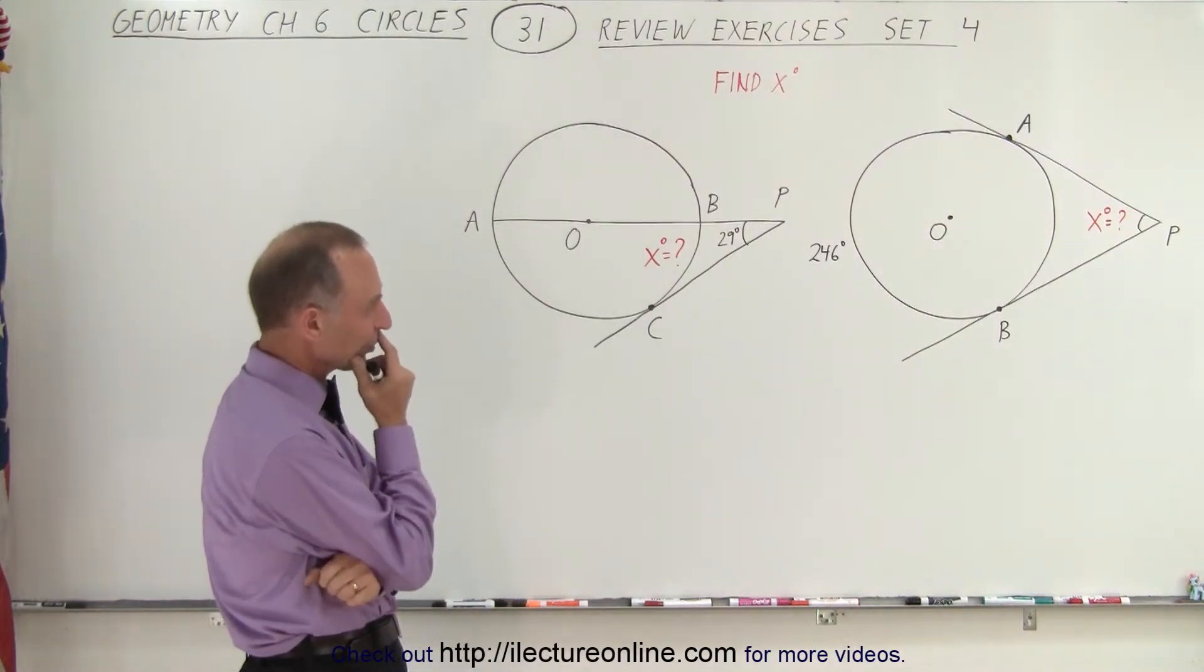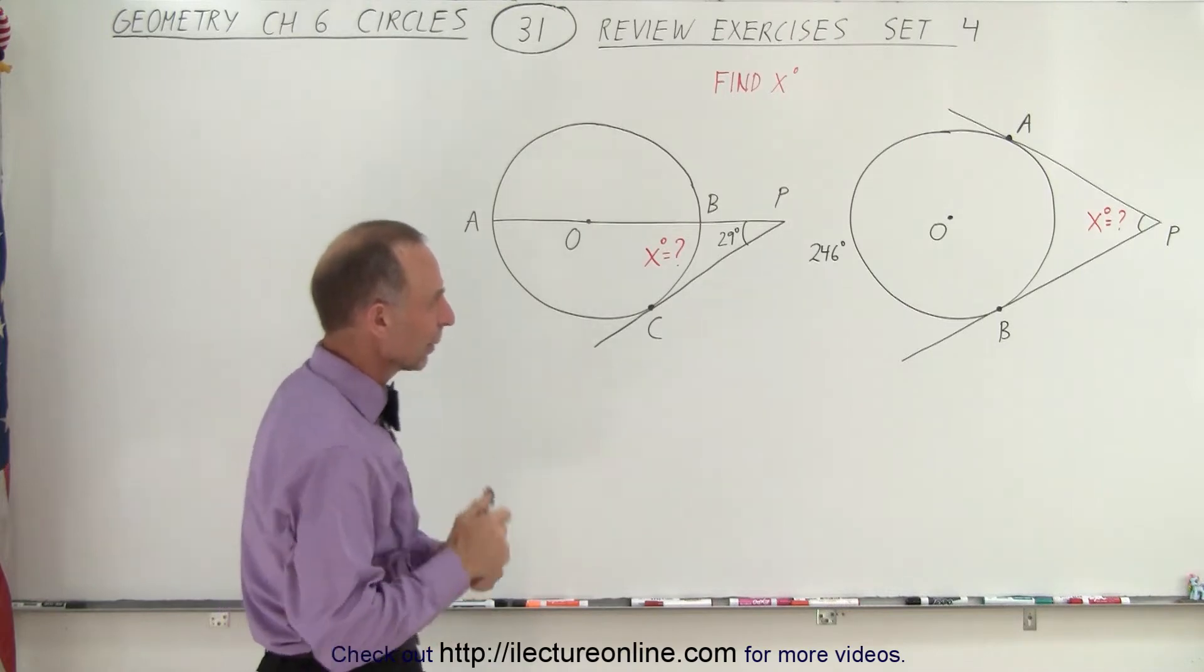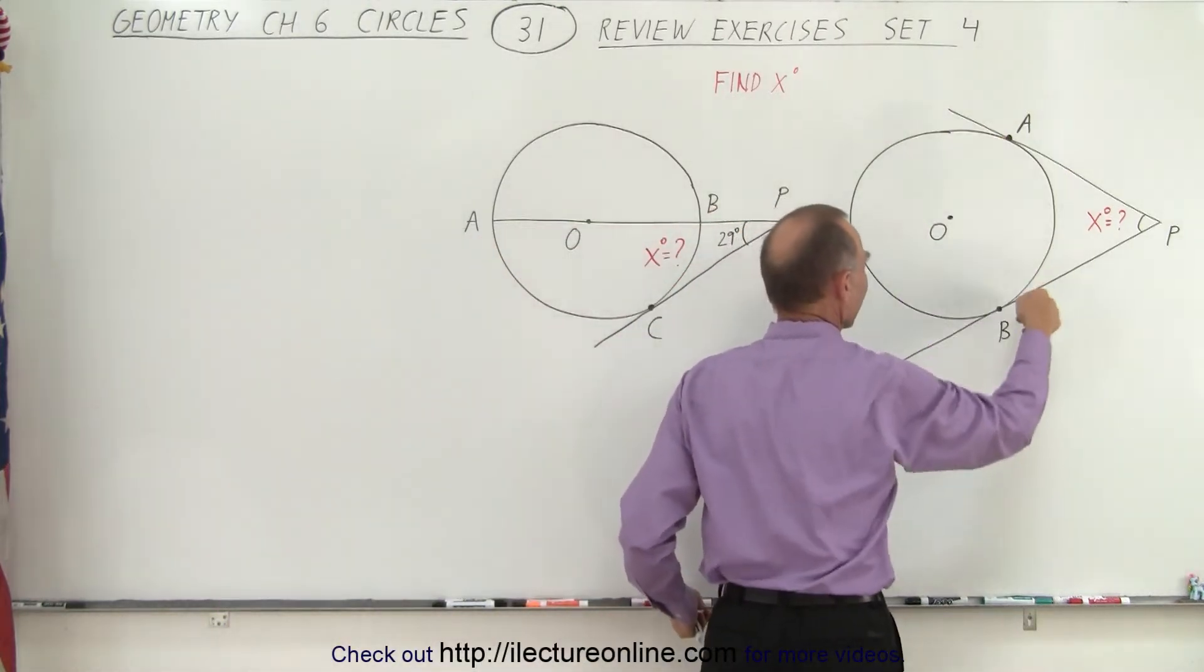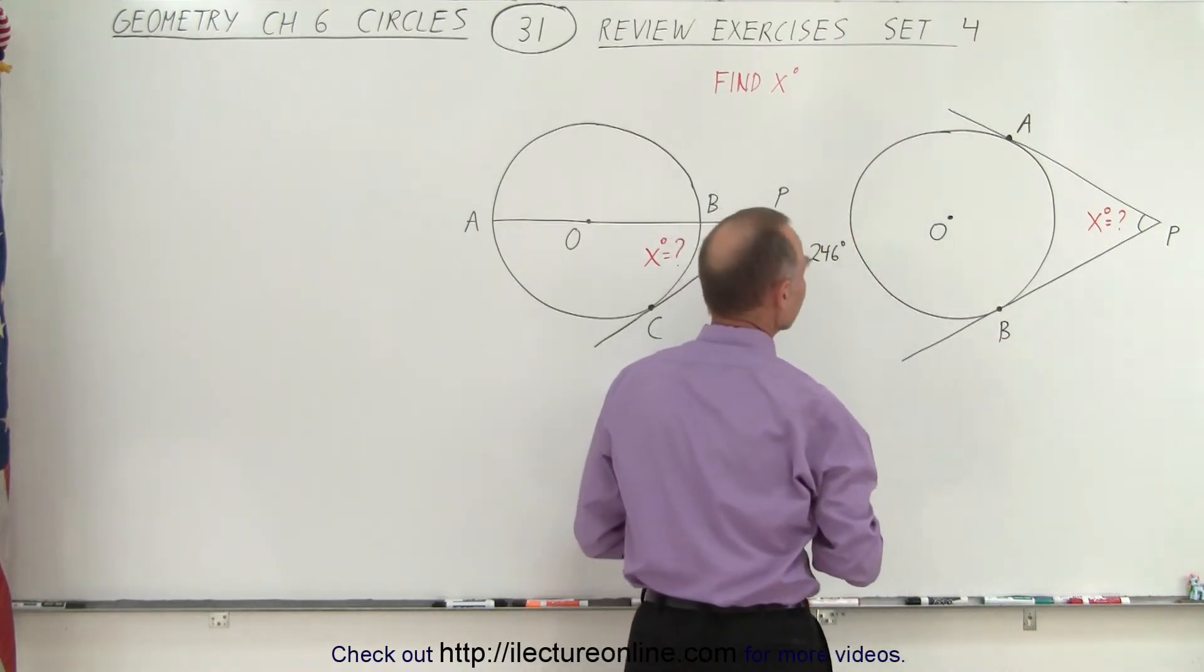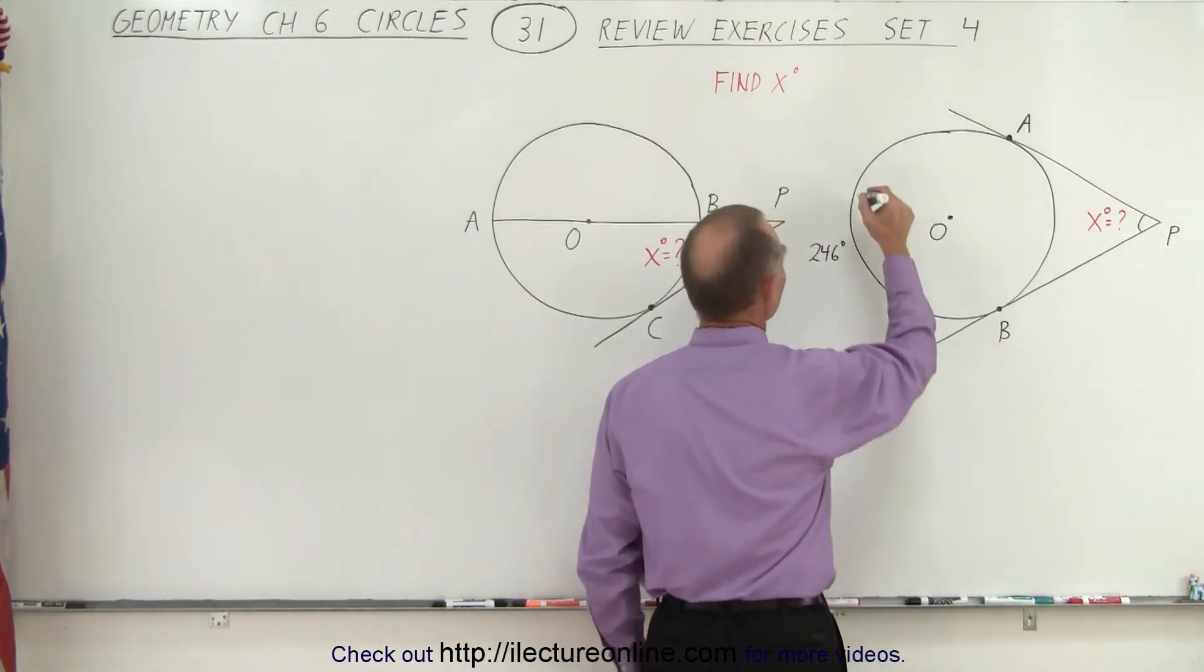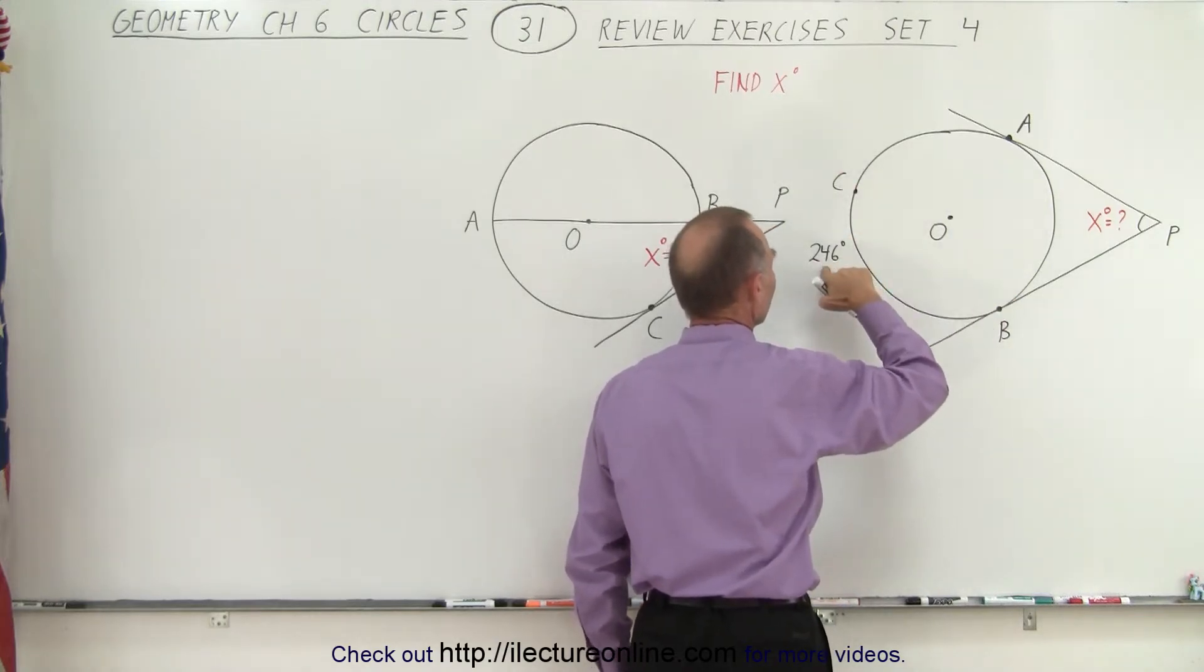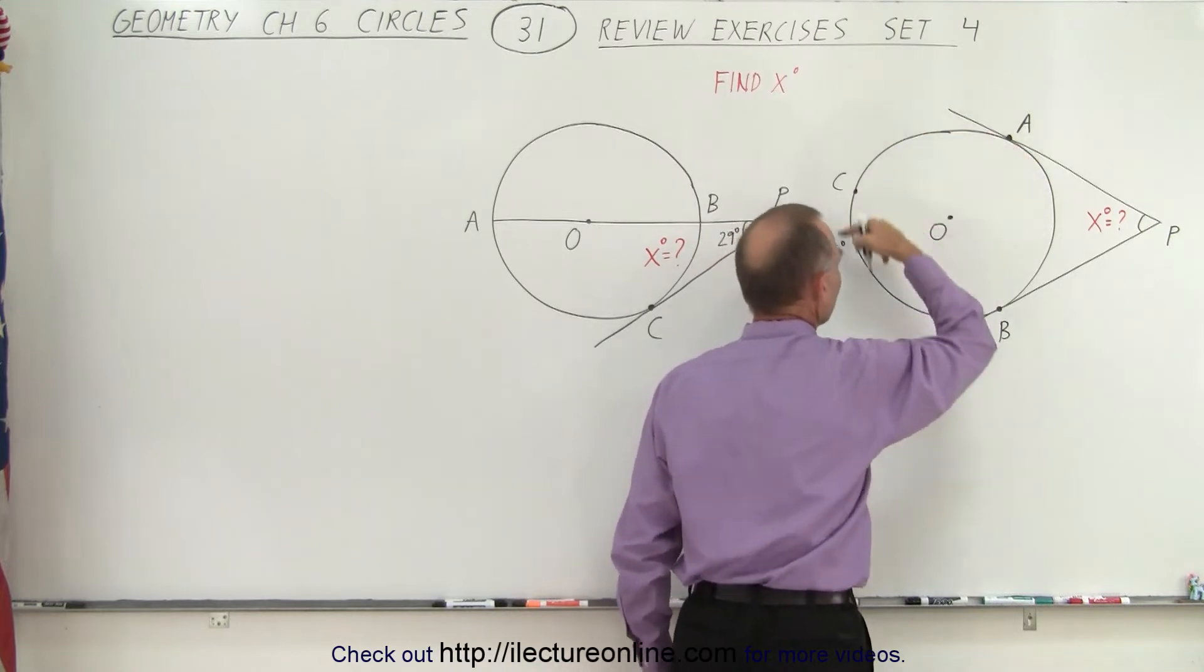And so looking at our first one, right away we can see that we have the outside arc and the inside arc. Let's put another point in here, we have A, B, C. We probably want to put a point there. Notice that the 246 degrees is the arc length from A to B on the outside.